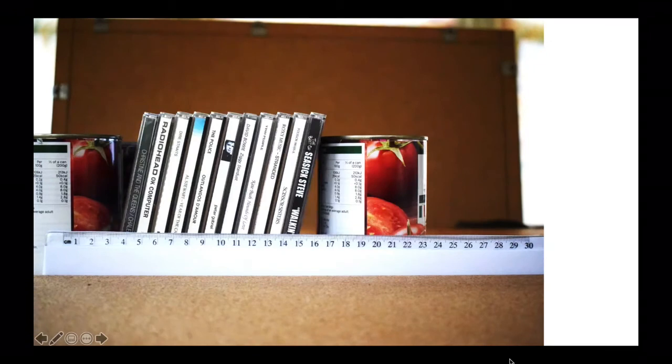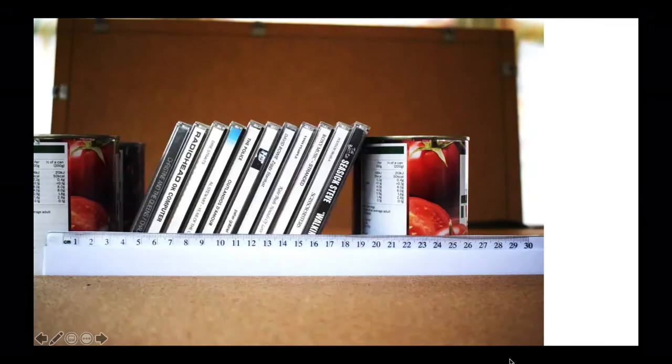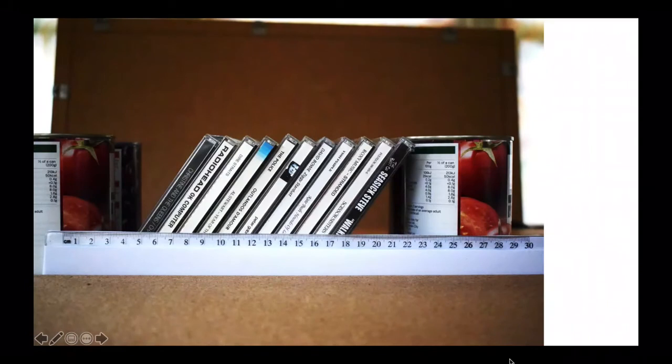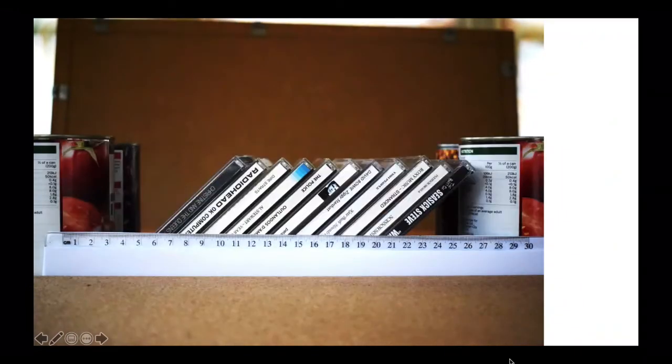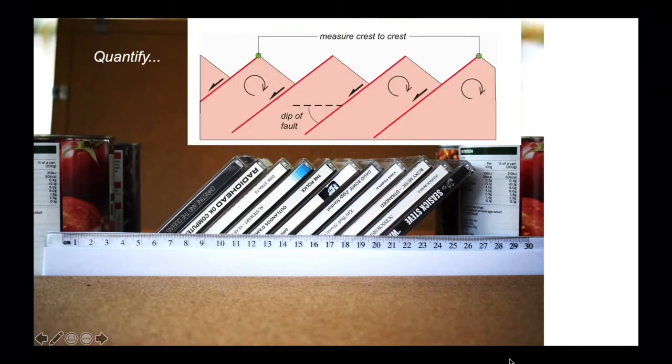We're going to rotate a bit, move the blocks a bit further apart, and a bit more. So there we have the rotation of the faults, the rotation of the CDs that have accommodated the extension as we increase the separation between our cans of tomatoes. So we can quantify this. We're going to measure the distance from crest to crest across our model and we're going to measure the dips of the faults as we go.